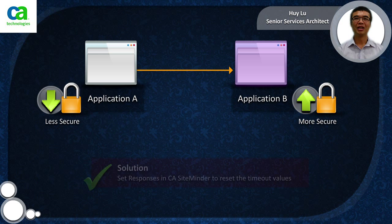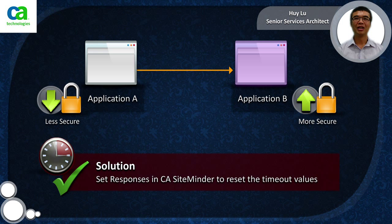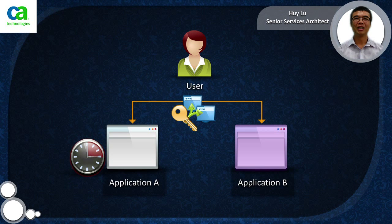The solution to this is to change the idle and max timeouts as we move from application A to application B. To do this we use SiteMinder responses. Timeout values for additional applications through single sign-on will still be governed by the session that was established at the initial login of the first application.